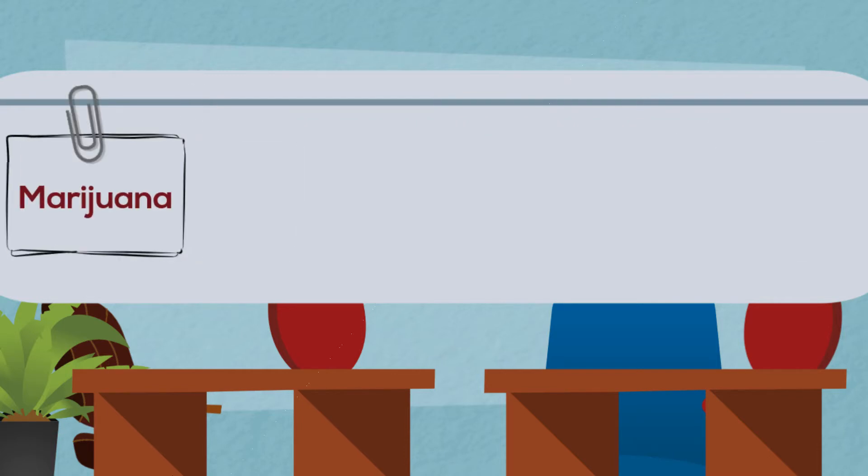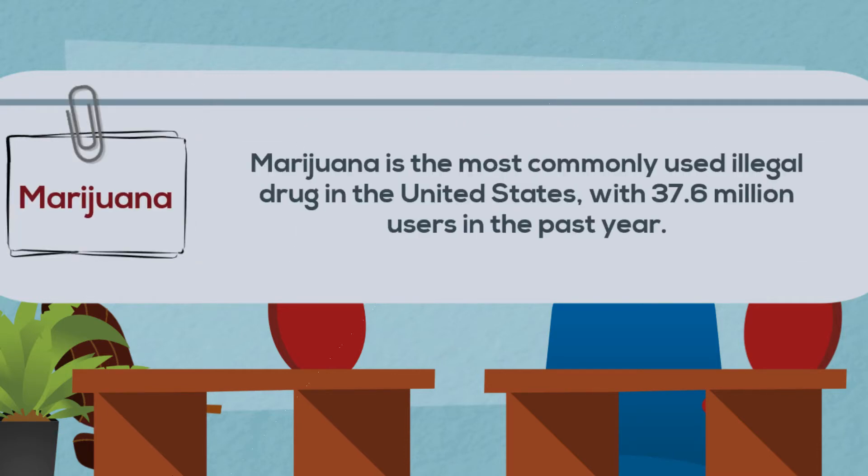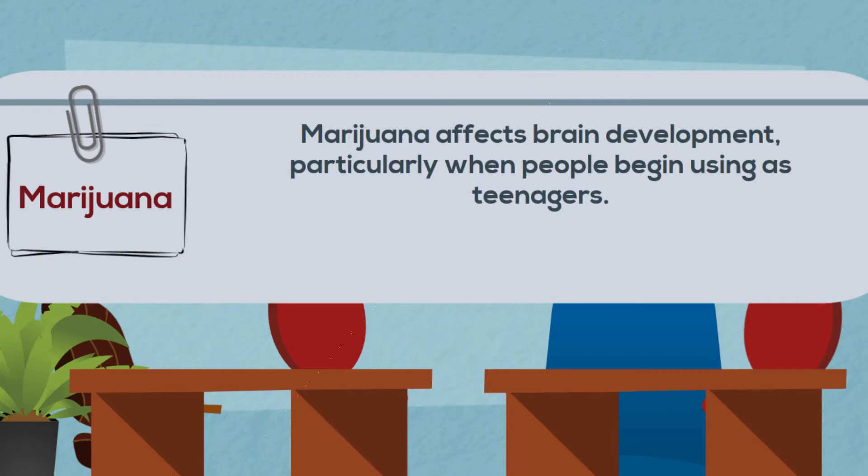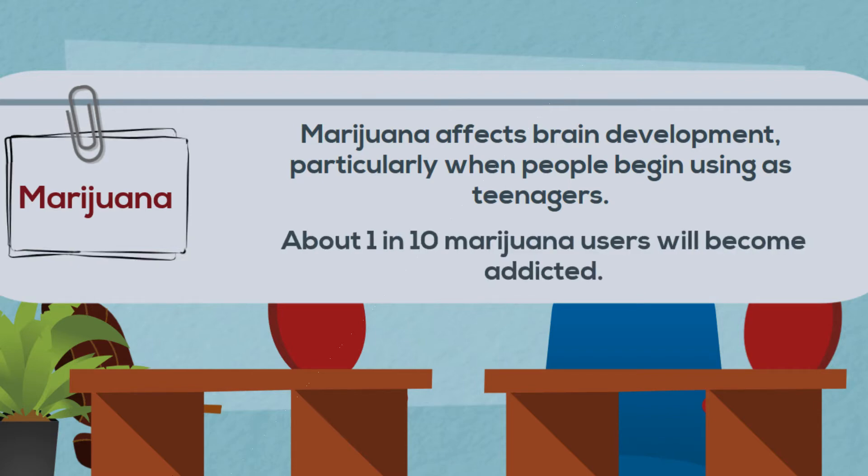Marijuana is the most commonly used illegal drug in the United States, with 37.6 million users in just the past year alone. Marijuana affects brain development, particularly when people begin using as teenagers. About 1 in 10 marijuana users will become addicted. For people who begin using before the age of 18, that number rises to 1 in 6.